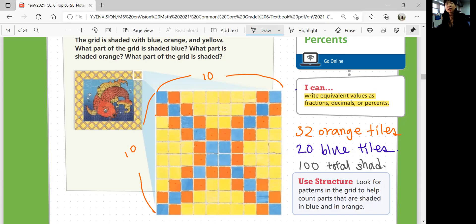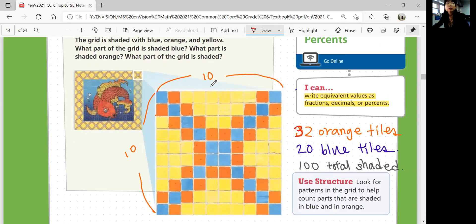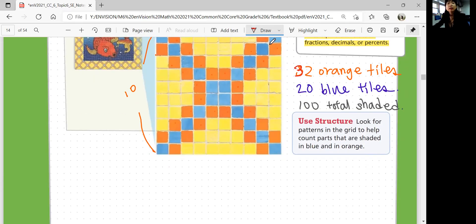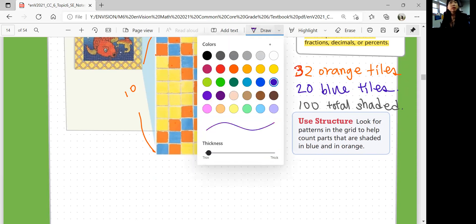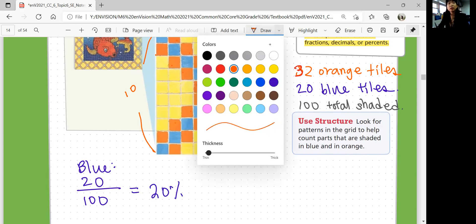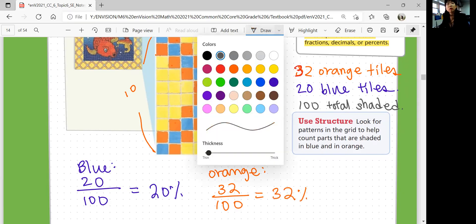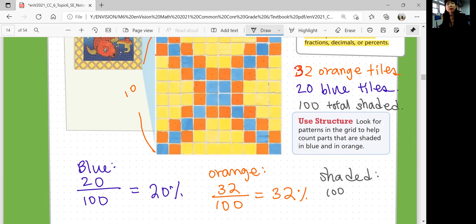So you can subtract 32 and 20 from 100 to get how many yellow tiles there are. So, what part is shaded blue, orange, and shaded at all, right? So let's find the parts. For blue, 20 blue tiles out of 100 total shaded would be 20% of tiles that are shaded. And orange tiles, 32 out of 100, which is 32%. And the whole, the total shaded tiles are 100 out of 100 tiles. So that's 100% shaded, right?